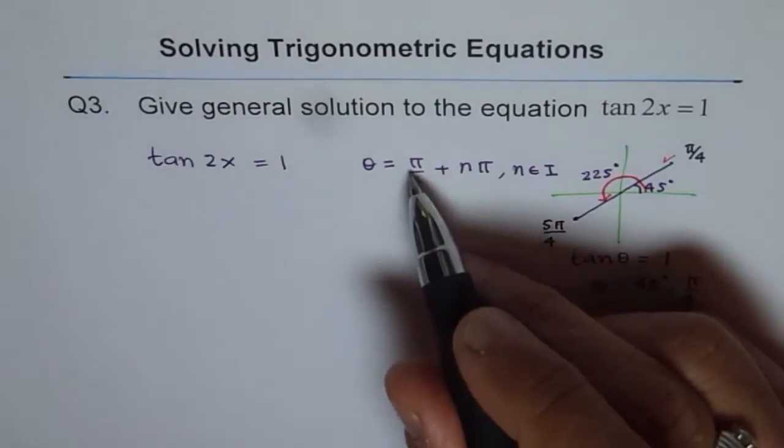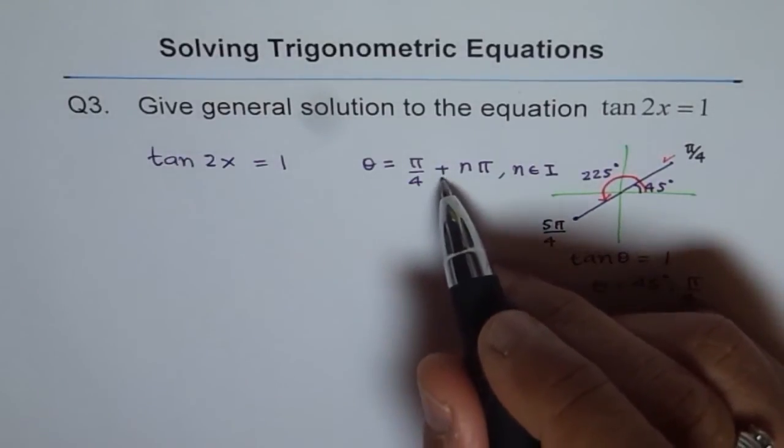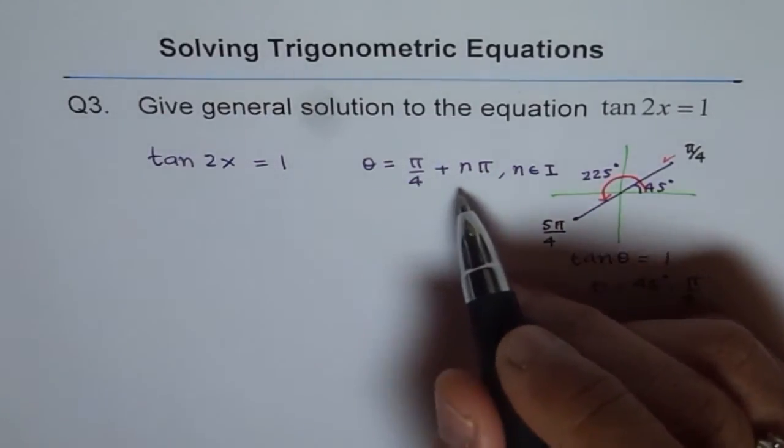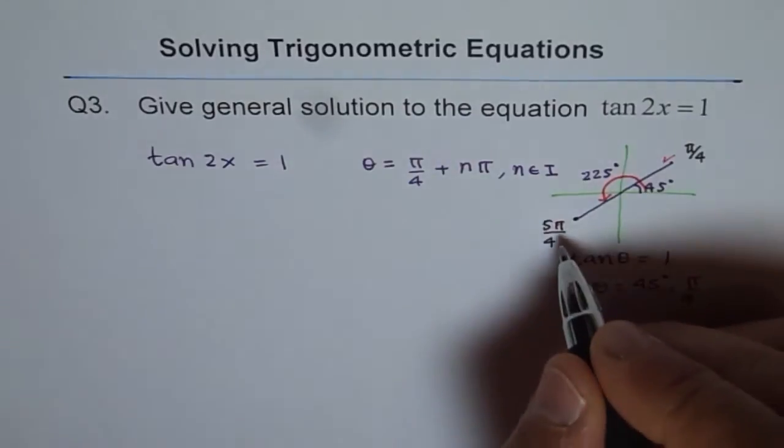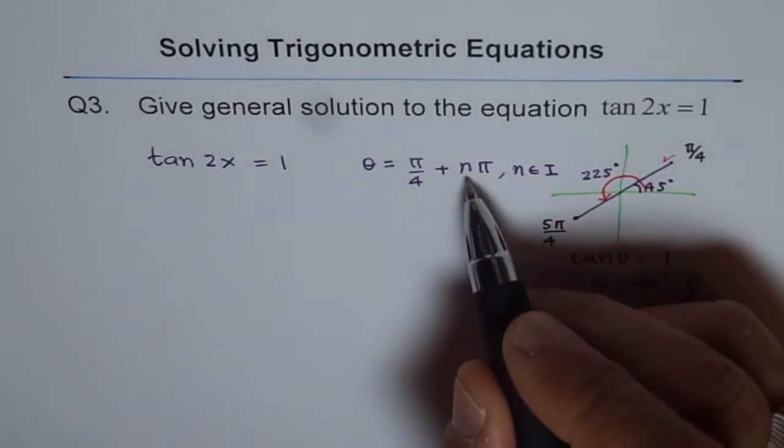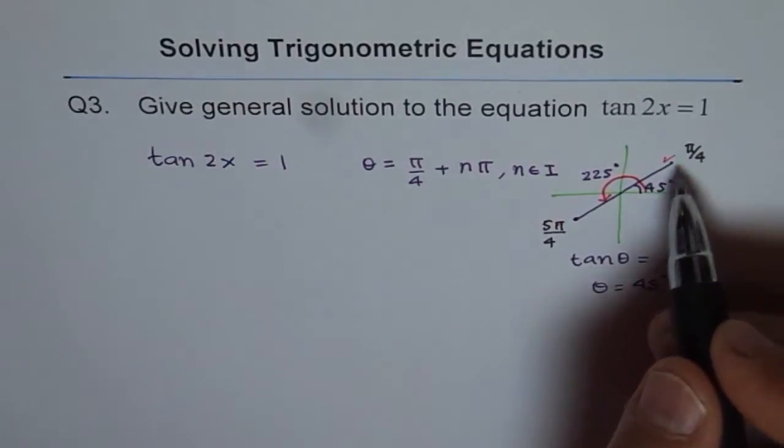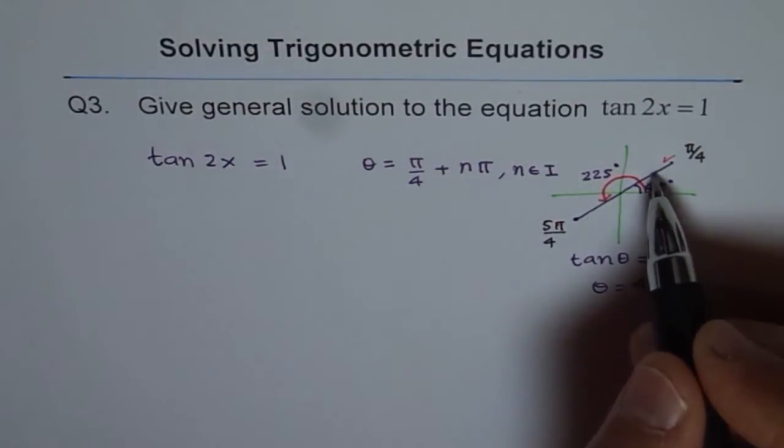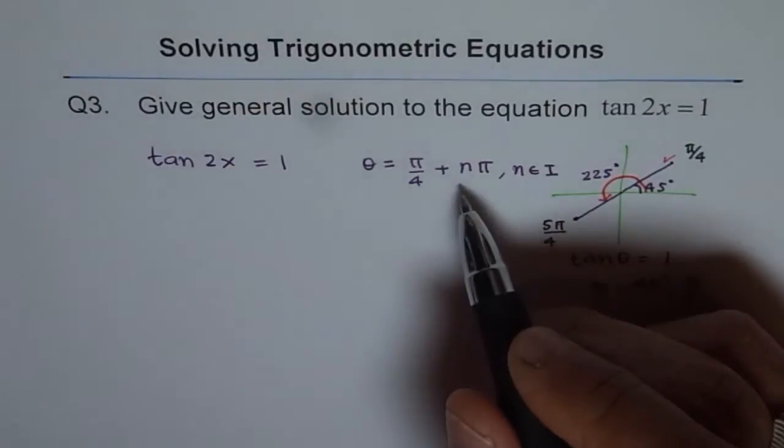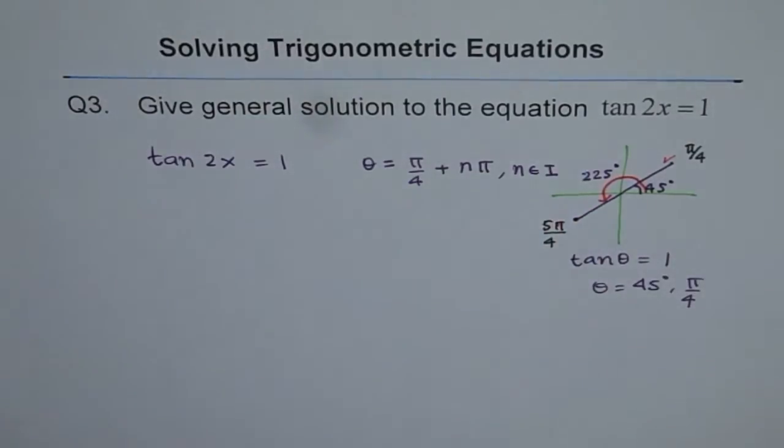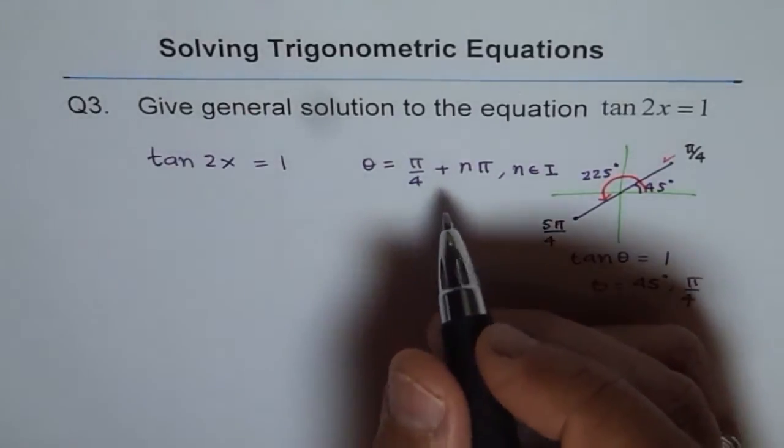Let's write n as 1. What do I get? I get pi by 4 plus pi, which is 5 pi by 4, that's correct. If I write n as 2, then 4 times 2 is 8, 8 plus 1 is 9. We get 9 pi by 4, that is 8 plus 1, that is also correct. So it works. That is the solution which we could write.